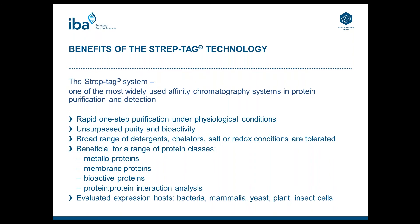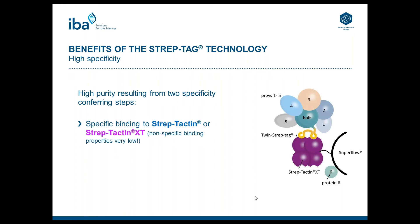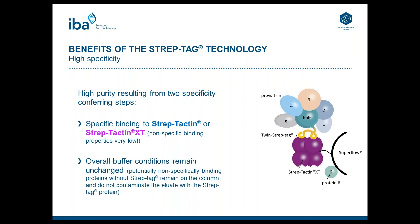The high purity results from two specificity-conferring steps. The first step is the specific binding of the Twin StrepTech or StrepTech 2 towards Streptactin or Streptactin XT. Similar to Streptavidin, Streptactin and Streptactin XT have very low non-specific binding properties towards unspecific proteins. The second specificity-conferring step is the overall buffer conditions, which remain unchanged during the whole purification procedure. By simple addition of biotin or desthiobiotin to the buffer, the target protein is eluted from the resin, while proteins that bind unspecifically to the matrix will not be eluted and will stay on the matrix.